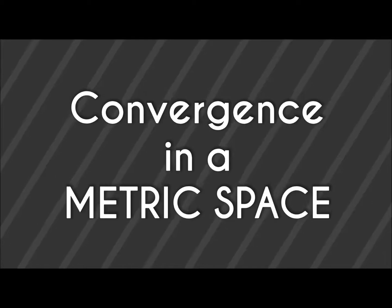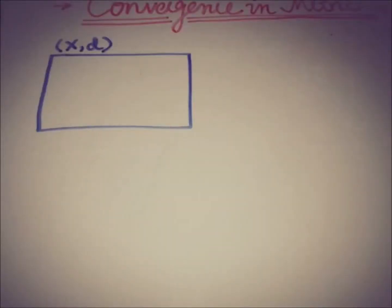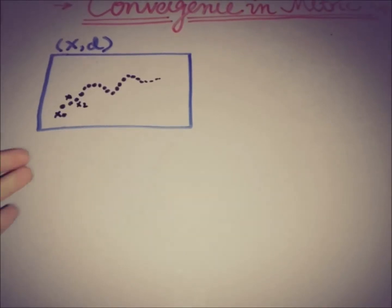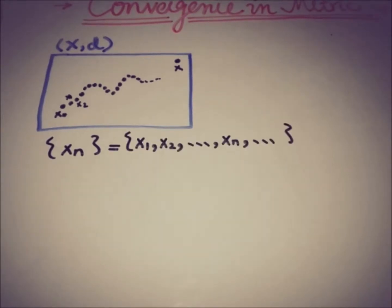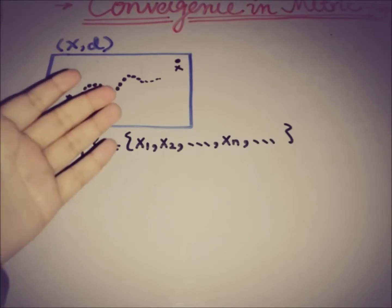Hello everyone, this is Da from eAcademy. Today we are going to see what is meant by convergence in a metric space. If we have a metric space (X, d) and a sequence in this metric space such as x0, x1, x2, that converges to some point x, where x belongs to the metric space, the condition for this sequence to converge to point x must be examined.